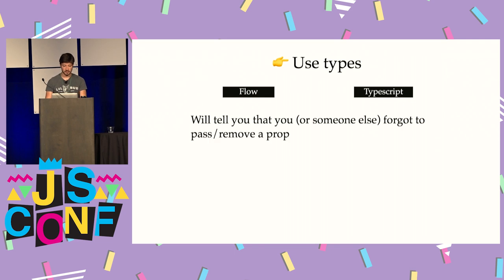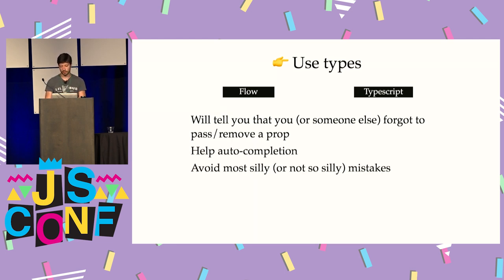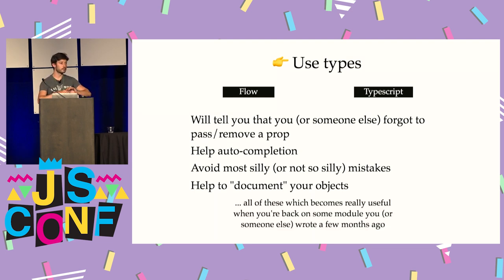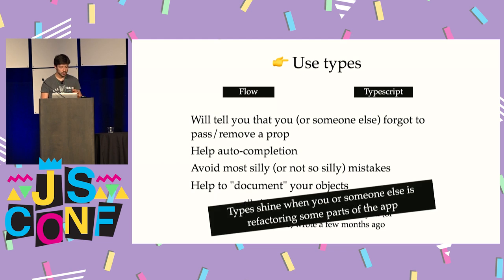My next advice is to use types — for example Flow or TypeScript. In my case I've been using Flow because I was more used to it. Types will tell you when you forgot to pass or removed a prop after refactoring, help with autocomplete, avoid silly mistakes, and help document your objects. All these benefits aren't always obvious when you write the code, but they really shine later when you or someone else comes back to a module written a few months ago and needs to refactor it. After a few months, you are a stranger to your own code base.